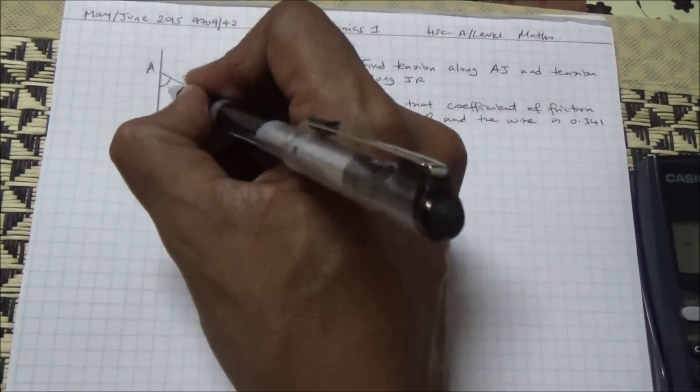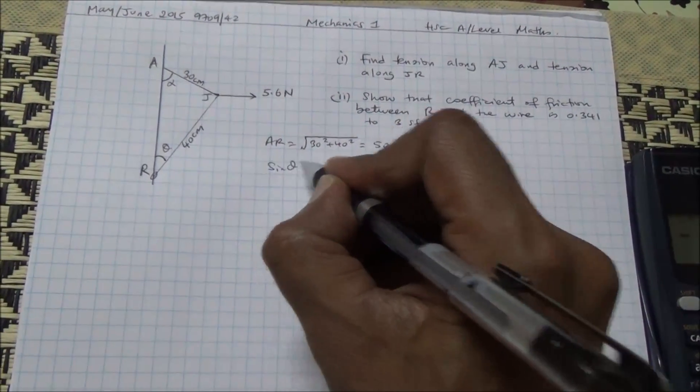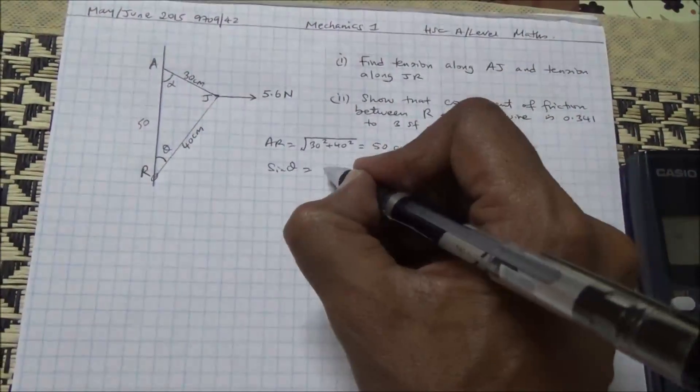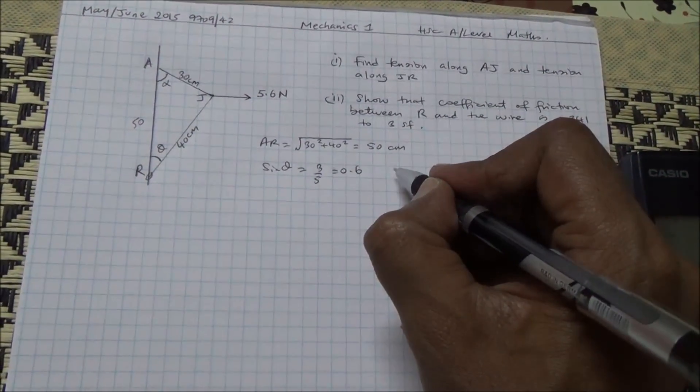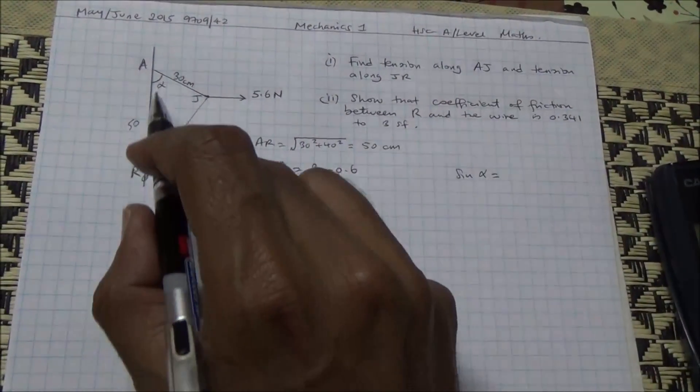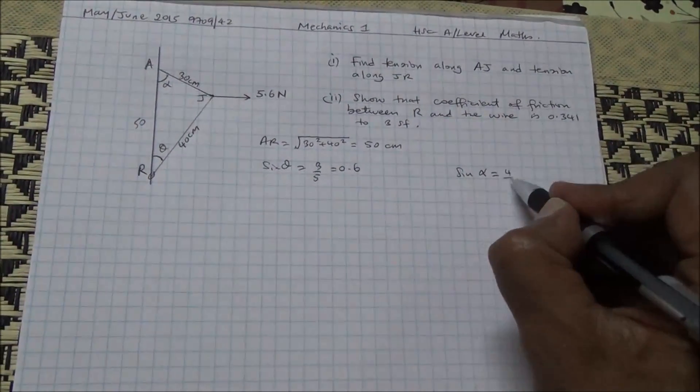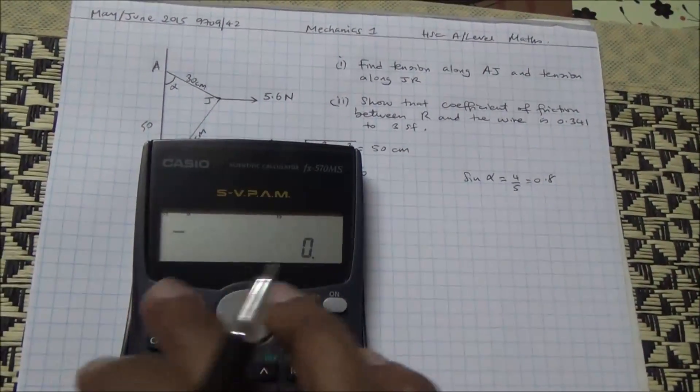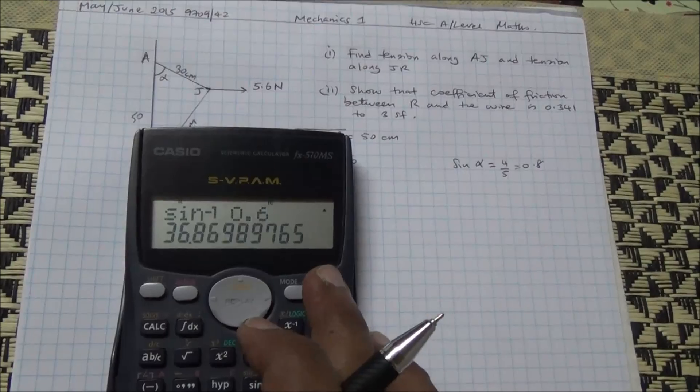Also, I am going to call this theta and this alpha. Now we can find the sine of the angle. So sine of alpha is equal to the opposite over the hypotenuse, 3 over 5, which is 0.6. And the sine of theta is going to be the opposite, 4 over 5, which is 0.8. The inverse sine of 0.6 is going to give us 36.9 degrees.